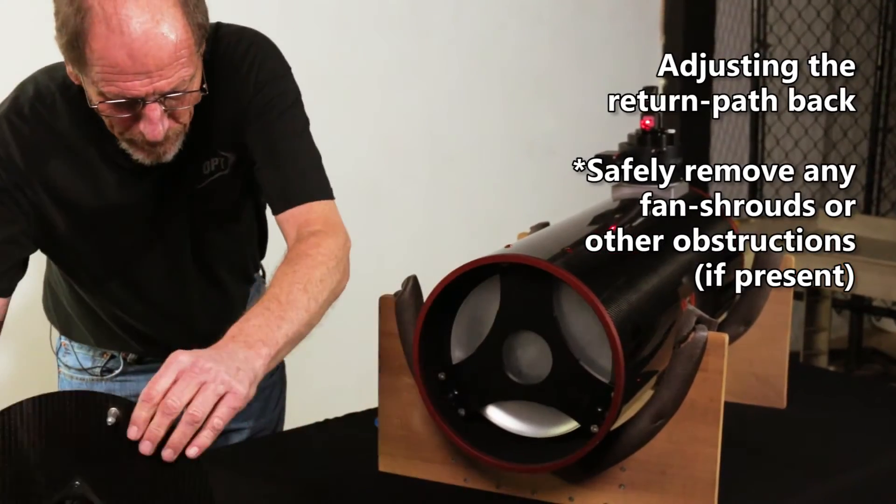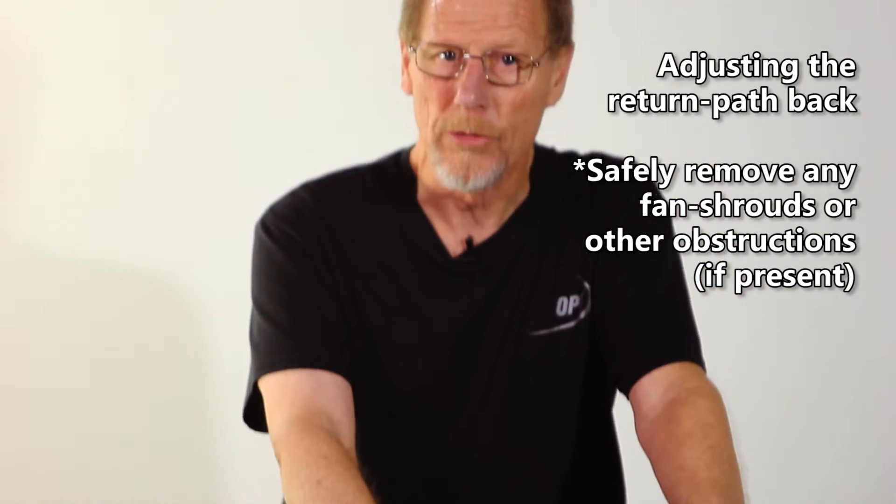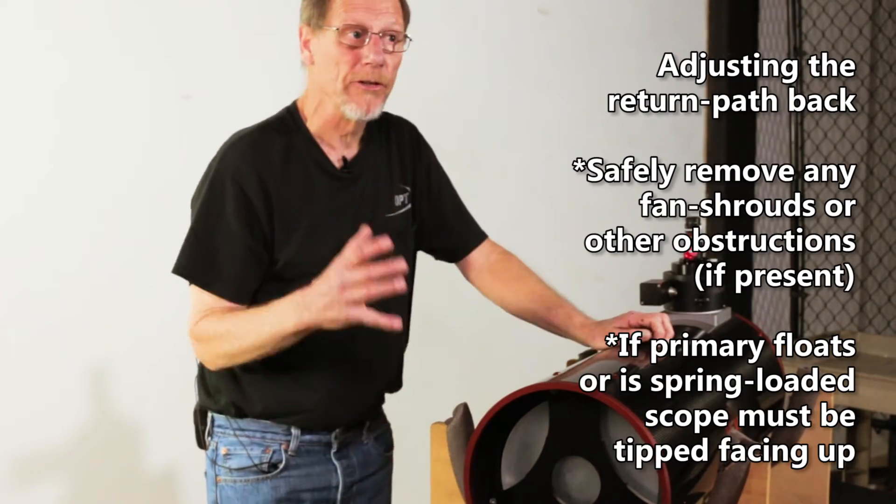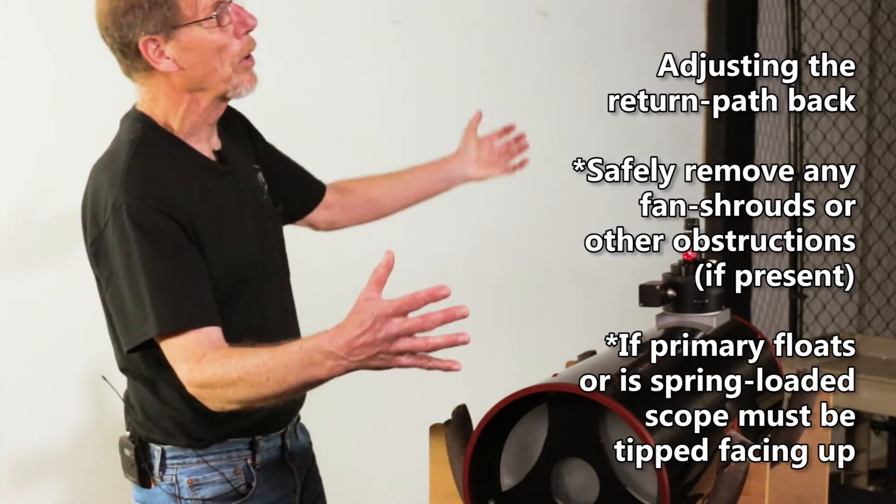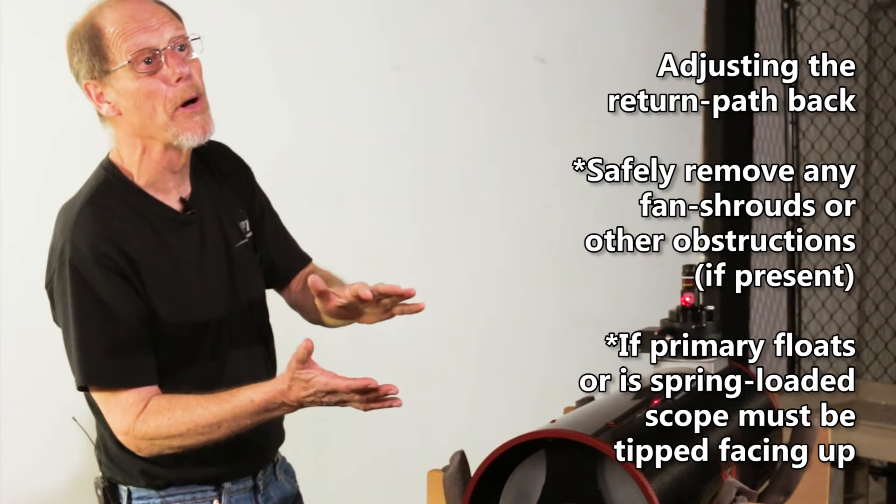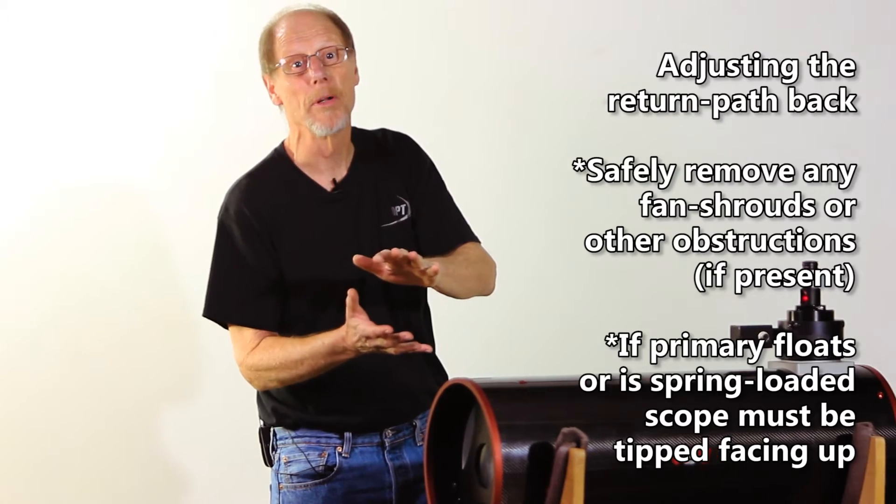So in some cases, some of the Newtonian designs, they'll have spring loads or the actual primary mirror floats. If that's the case on yours, you'll need to actually point the scope upward to make the adjustments because you want the weight of the primary mirror down against the collimating screws or the adjustment screws for that primary mirror.